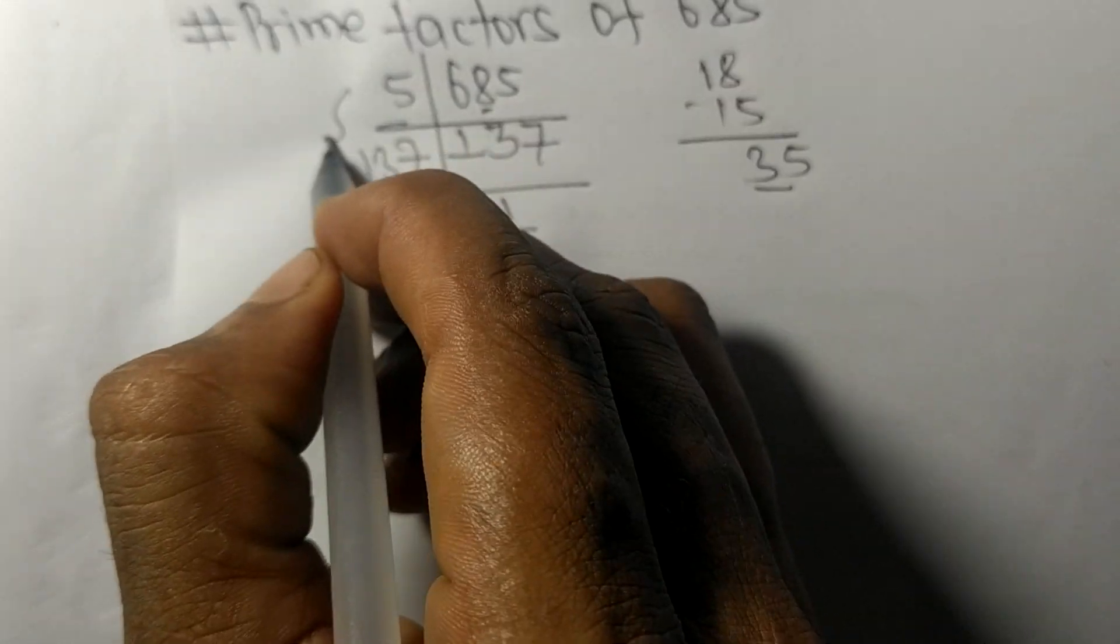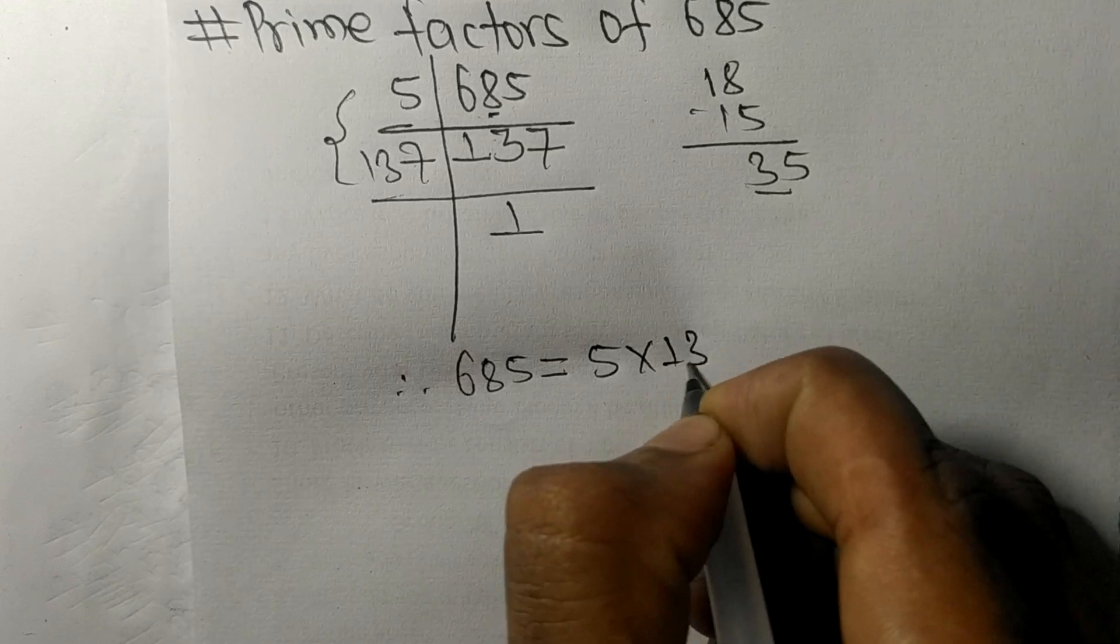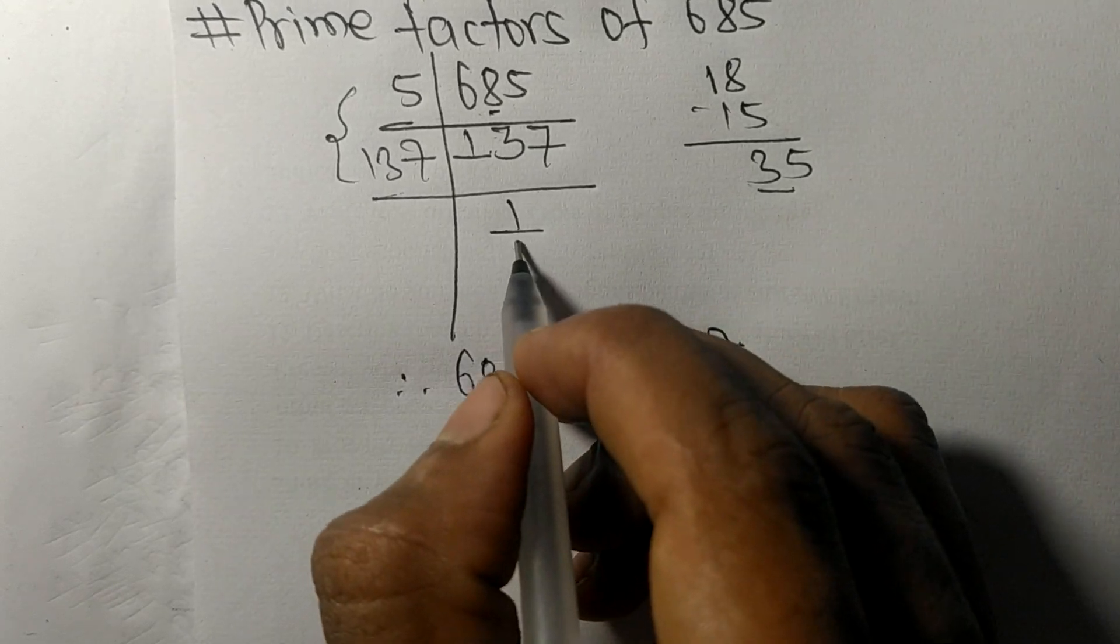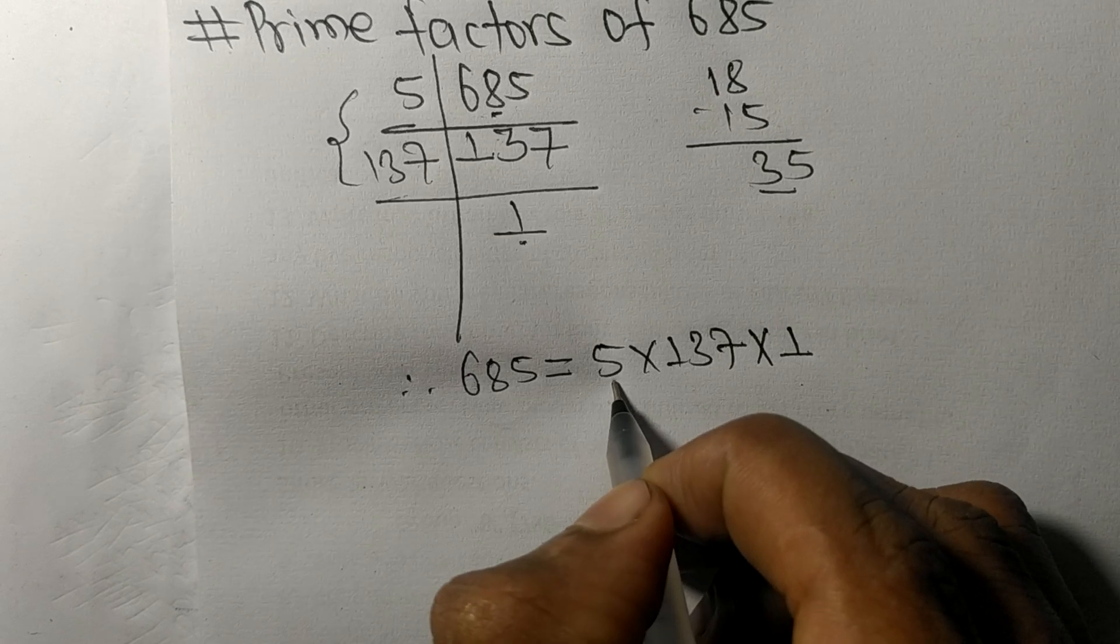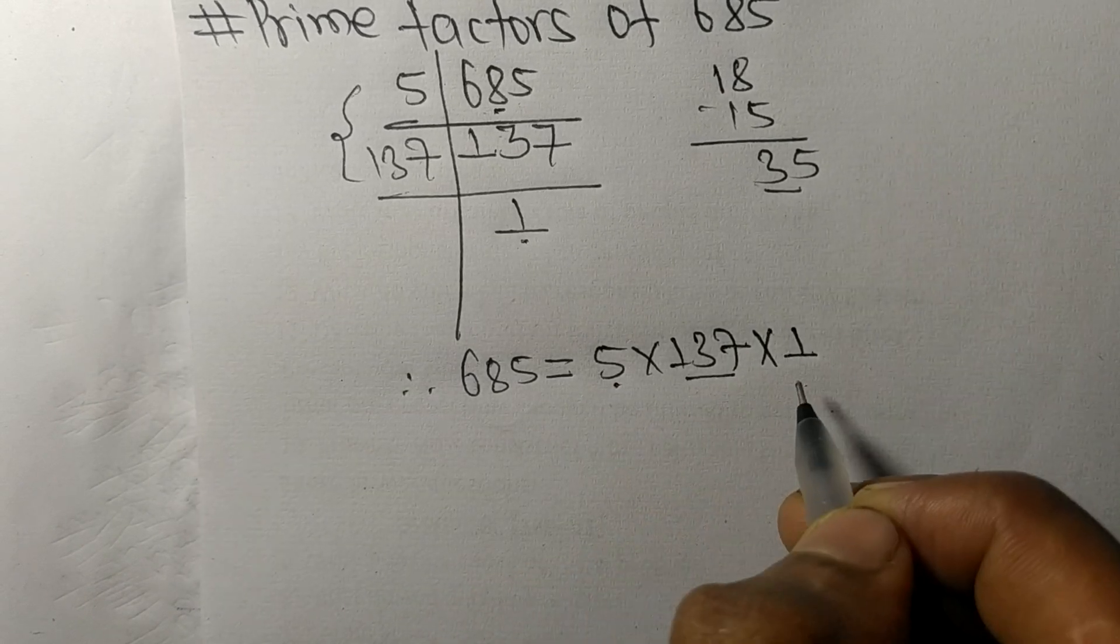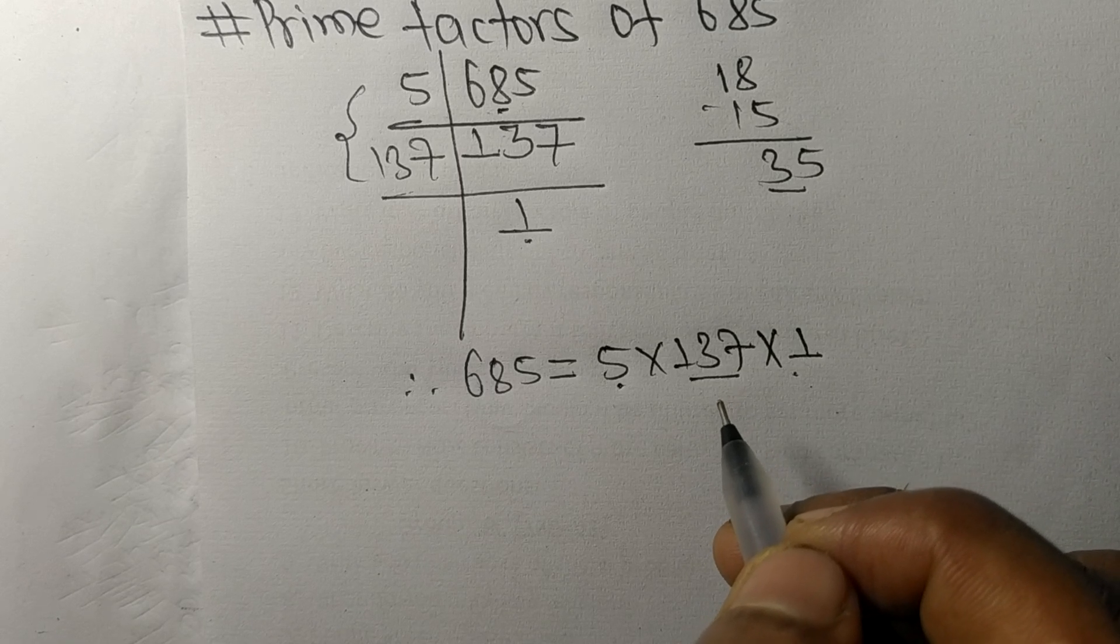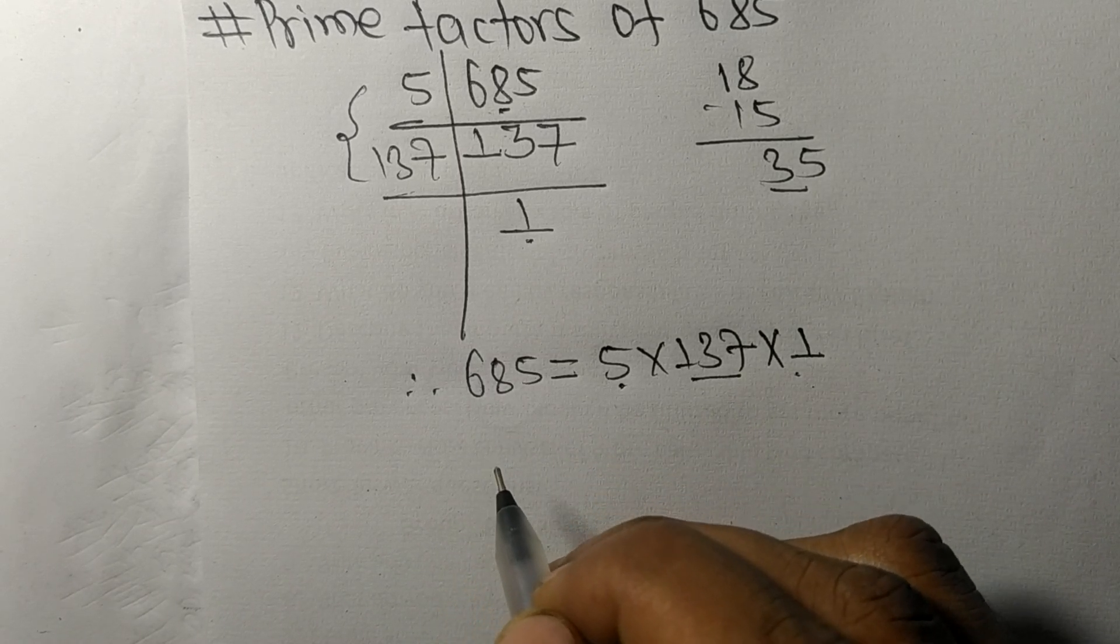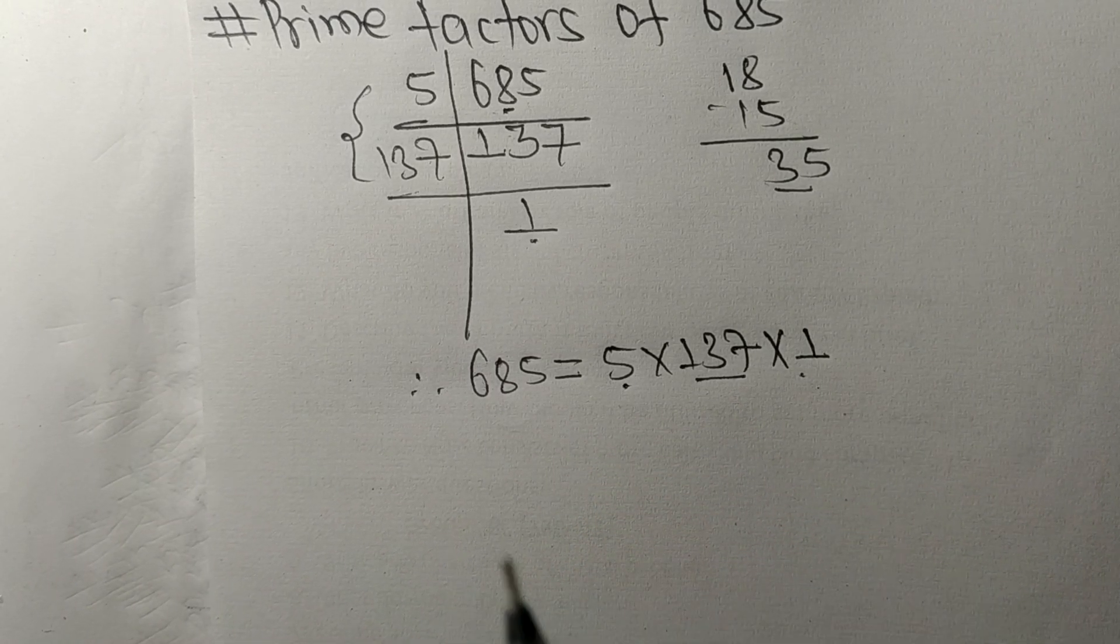Therefore 685 is equal to, from this side it is 5 times 137, and from here it is 1. So 5, 137, and 1 are the prime factors of 685. So this much for today and thanks for watching.